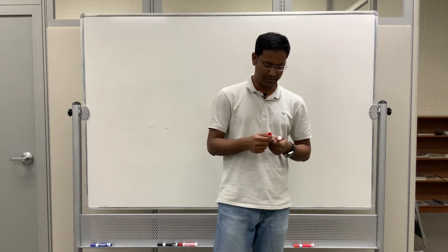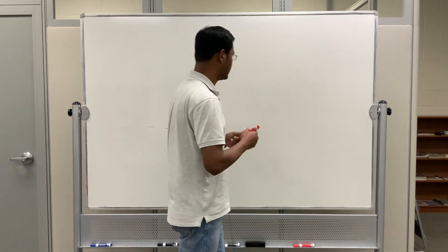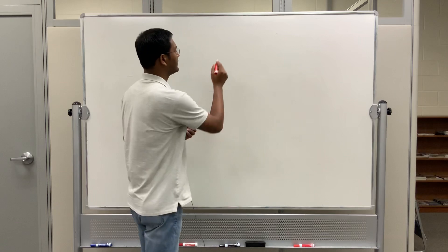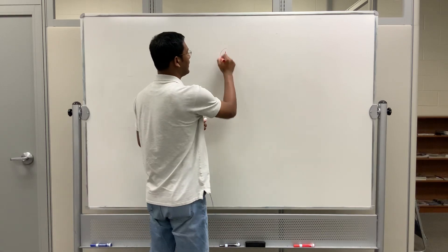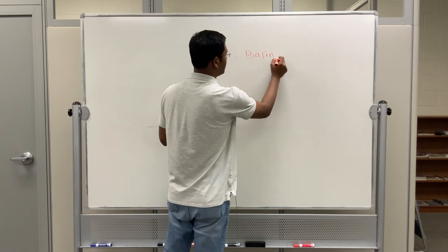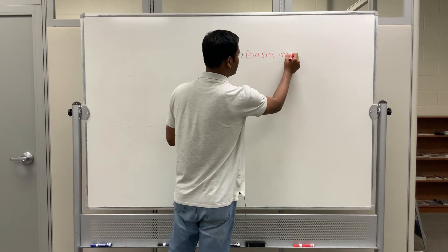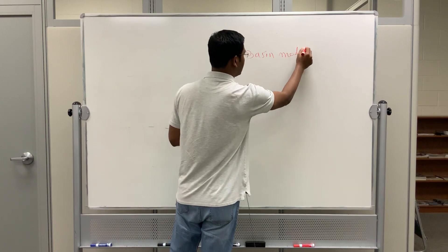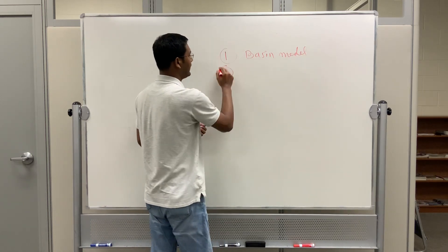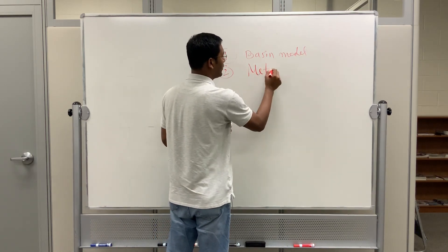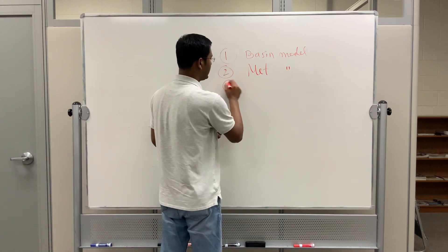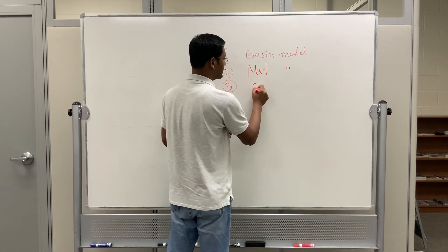There are three basic modules for HEC-HMS. Number one is the Basin model. Number two is the MET model. And number three is the Control Specification.